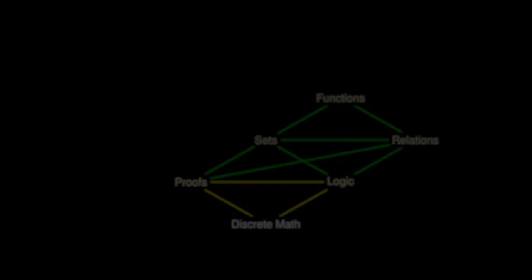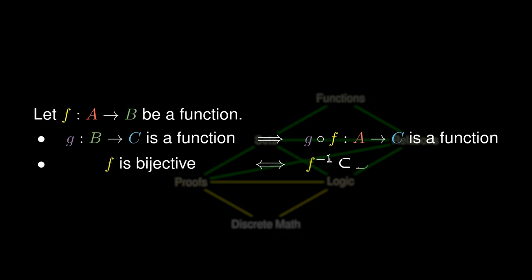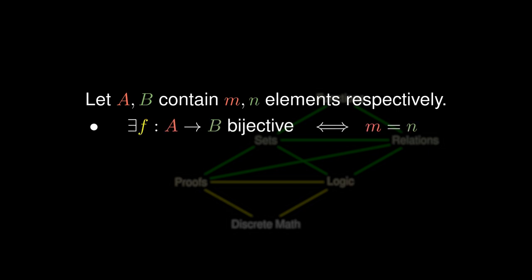Furthermore, we can combine functions together. If F is a function and G is a function, we can define the composite function G circle F — we take all the outputs of F and plug them into the function G. It turns out that F is bijective precisely when the inverse relation F turns out to also be a function. We can consider two sets A and B with M and N elements respectively, and there is a bijection from A to B precisely when M equals N.